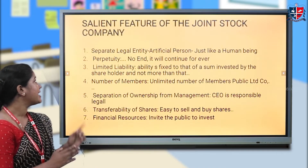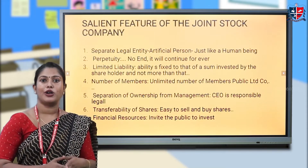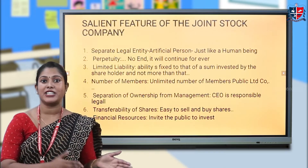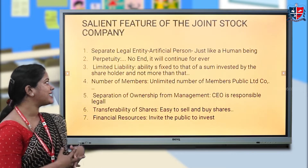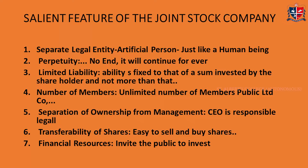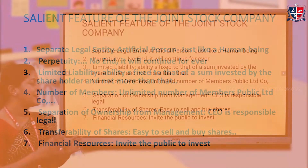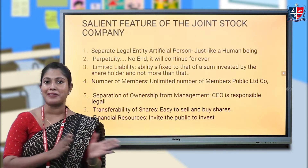The first feature is separate legal entity — because a company is an artificial person, the company is separated from its shareholders. Next is perpetuity, meaning the company has no end; it continues forever. Next is limited liability, which means the liability is limited to the shareholder's investment amount and not beyond that.